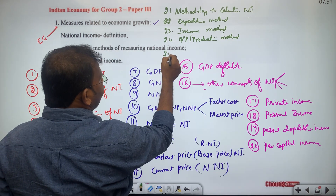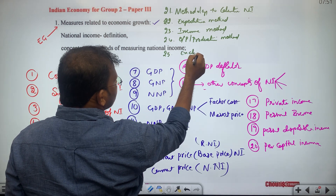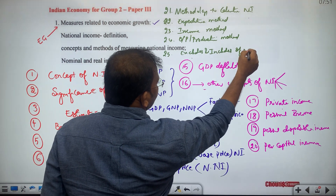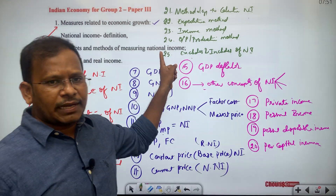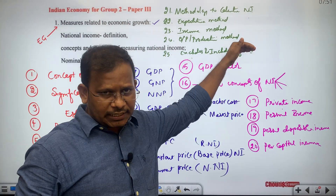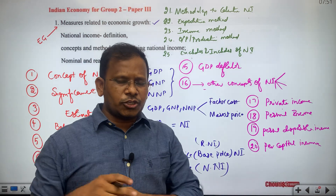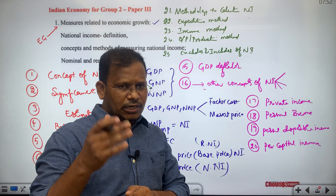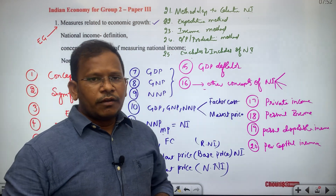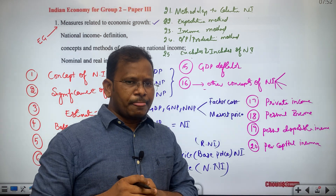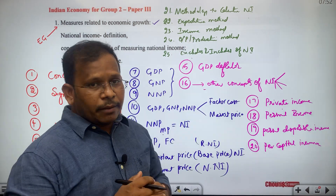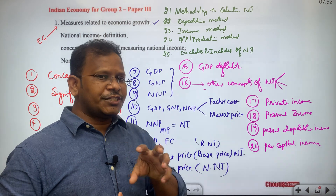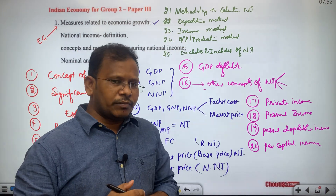The 25th subtopic covers excludes and includes of national income — some items should be excluded and some must be included in the calculation. We also study for which sector we use the expenditure method, for which we use the income method, and for which we use the output or production method, and how to differentiate these three methods.